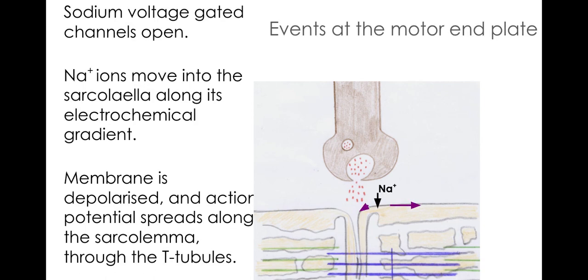Now as we should already be familiar with in terms of nerves, when the sodium voltage-gated channels are stimulated, what happens is that the sodium will move in along the electrochemical gradient. Membrane is depolarized, and action potential spreads along the sarcolemma through the T-tubules.